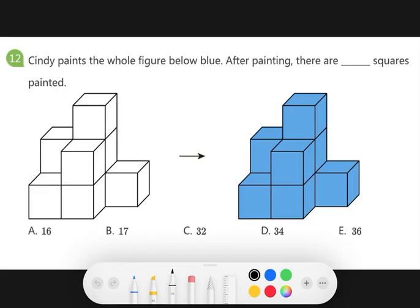Cindy paints the whole figure below blue. After painting, there are how many squares painted? So we need to answer the number of squares to be painted in blue. We have to count the number of squares. So how do we do it?